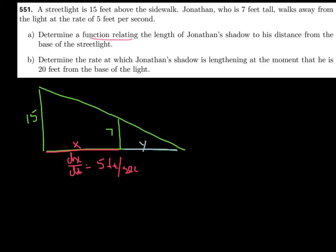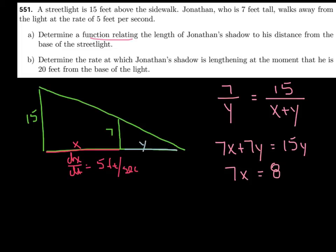And the first thing they want me to do, and it really doesn't involve any calculus at all, is they wanted me to determine a function that relates the length of Jonathan's shadow to the distance from the base of the streetlight. So I'm going to take advantage of the fact that I have two similar right triangles, and I'm just going to set up a proportion, and I'm going to say, for instance, I could say 7 is to Y as 15 is to what? I'm going to challenge you to think about that right there. What would be the equivalent piece? It would be the sum of both X and Y. I'm going to now cross multiply, and we'll just kind of subtract the 7Y over, and here's my answer for part A. I said 7 times X is equivalent to 8 times Y, and that'll be true no matter how far or how long Jonathan walks for.